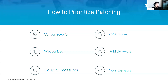Historically, we've addressed this by prioritizing the industry severity, such as the Common Vulnerability Scoring System, calculated by an independent organization such as NIST, and leveraging the National Vulnerability Database. This score ranges from 0 to 10, with higher ratings indicating a higher likelihood of exploitation.